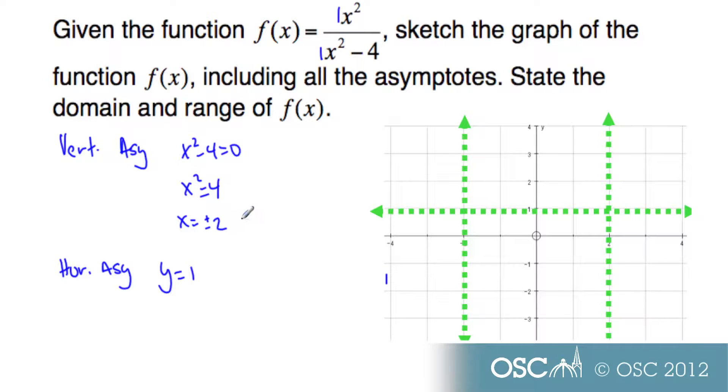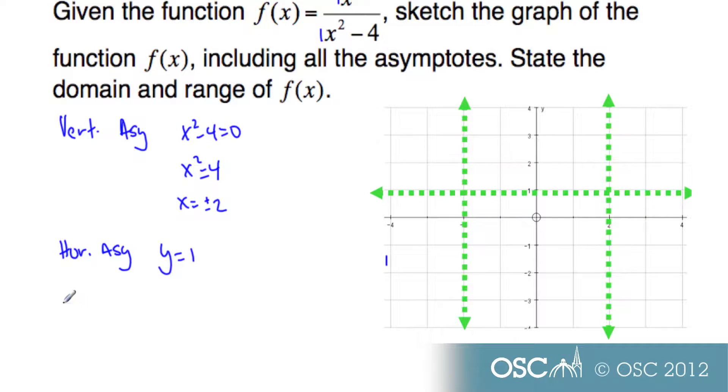To find out where the graph is, let's consider the x-intercepts. To find the x-intercepts, I let the y-value be 0. So 0 equals x-squared over x-squared minus 4. Multiply both sides equation by x-squared minus 4, and I get 0 is equal to x-squared. And so then I know that x equals 0. I have the coordinate point (0, 0), which is right here.